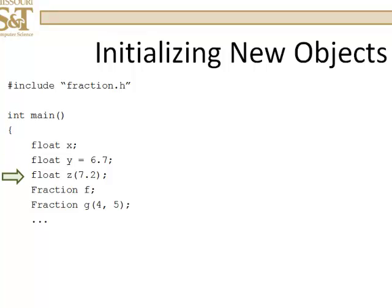Here's a different format for doing exactly the same thing. Here, you're passing 7.2 to the constructor to give that initial value to that float. Okay, so what happens when you want to declare an object of your user-defined type fraction? Will this line of code compile?